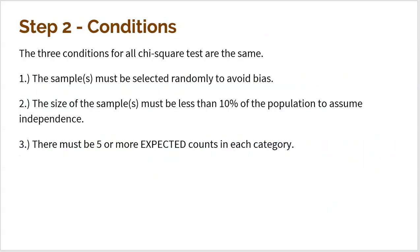Let's run through the conditions, which we've seen before from the chi-squared goodness-of-fit test. Condition one: samples must be randomly selected to avoid bias. Condition two: the size of the sample(s) must be less than 10% of the population(s) to assume independence — for a homogeneity test, all samples must meet this condition. Condition three: there must be five or more expected counts in each category. Note that it is the expected counts — not observed — that must be five or more.